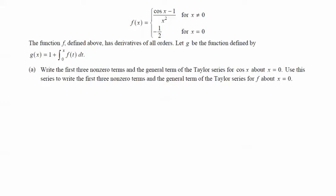The first thing that we want to do here is write the first three non-zero terms and the general term of the Taylor series for cosine of x about x equals 0. And cosine of x is 1 minus x squared over 2 factorial plus x to the 4th over 4 factorial.